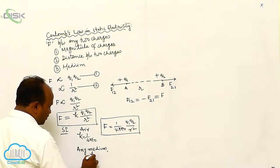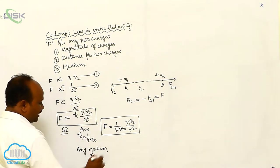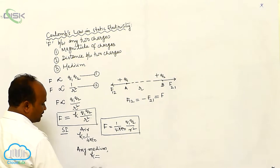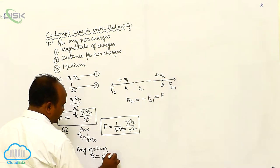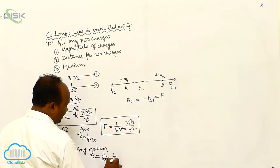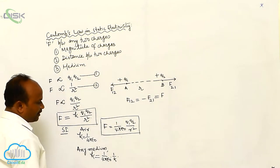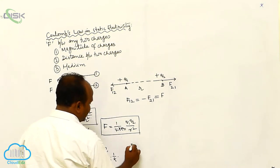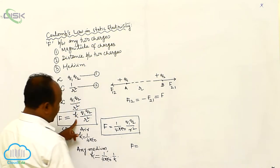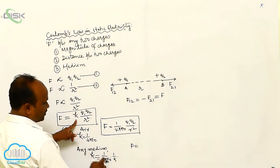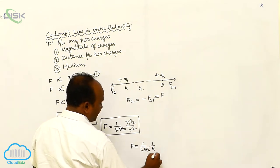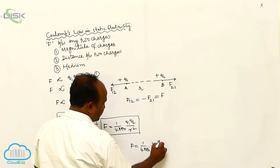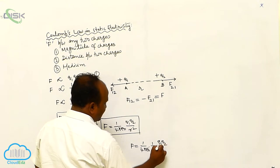Now, small k equals 1 by 4 pi epsilon 0 into 1 by k, for any medium. Therefore, the equation is: small k equals 1 by 4 pi epsilon 0 into 1 by k into q1, q2 by r square.